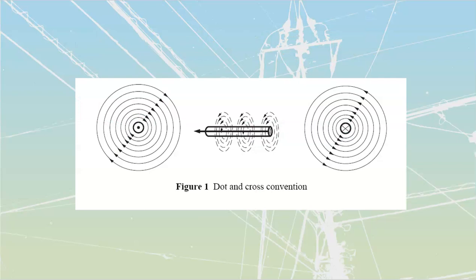The module starts out by saying you should remember from level one how to use your left-hand rule. We did go over this in the previous video, so you should be all right. Use your left-hand rule for conductors: stick your thumb in the direction of current on the conductor and you should be able to identify the direction of the rotating magnetic field. If you don't know your direction of current, remember dot and cross convention.